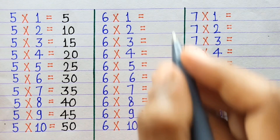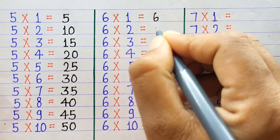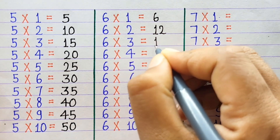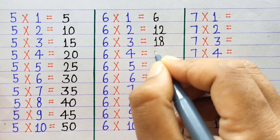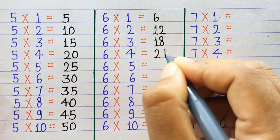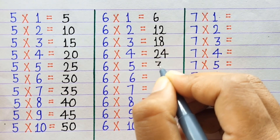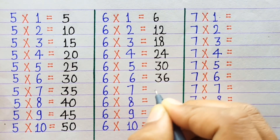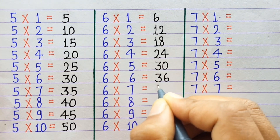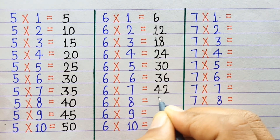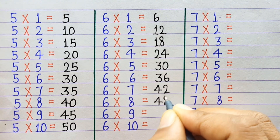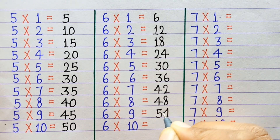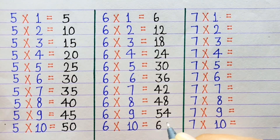5×1=5, 5×2=10, 5×3=15, 5×4=20, 5×5=25, 5×6=30, 5×7=35, 5×8=40, 5×9=45, 5×10=50. 6×1=6, 6×2=12, 6×3=18, 6×4=24, 6×5=30, 6×6=36, 6×7=42, 6×8=48, 6×9=54, 6×10=60.